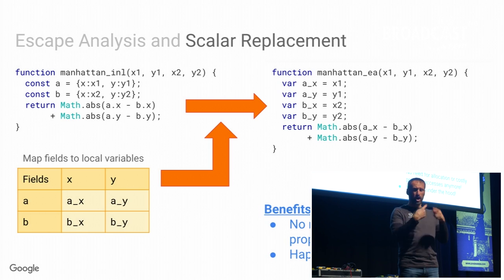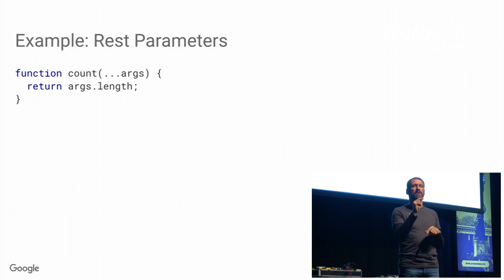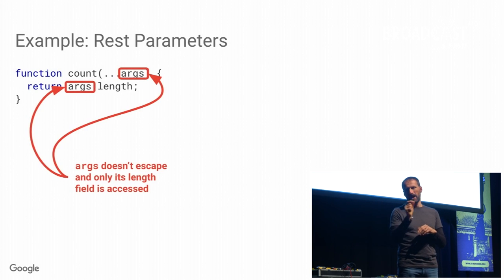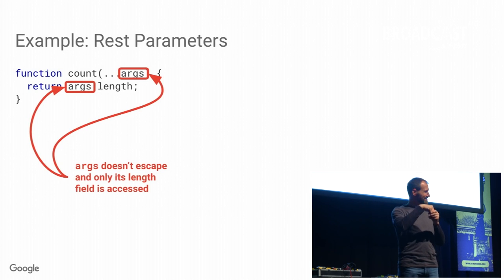You can just write your program in the best way for maintainability and let the VM worry about it. There's another example: rest parameters. I have a function 'count' that just returns the number of parameters you pass to it using rest parameters. The args array is allocated inside — there's no 'new' but the '...' syntax gives you an allocation — and you only access the length field. And I promise there's no allocation of this — I'll show you the code.